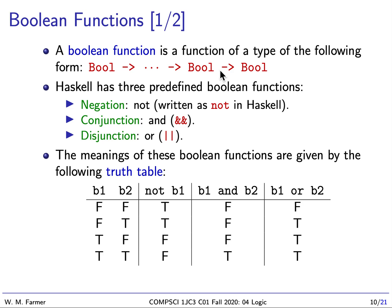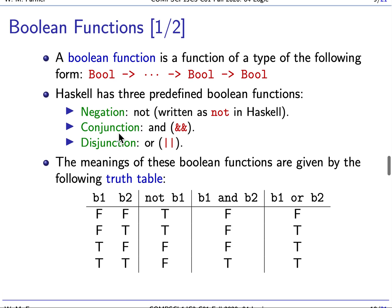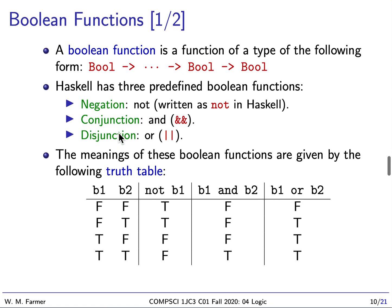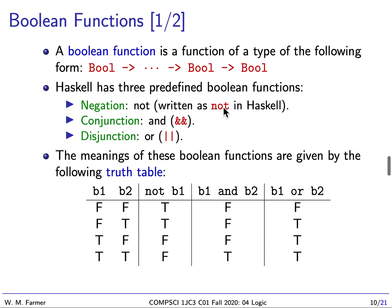Haskell has three predefined Boolean functions: negation, conjunction, and disjunction. Negation is written as NOT. Conjunction is written as a double ampersand (&&). And disjunction is written as two bars (||).